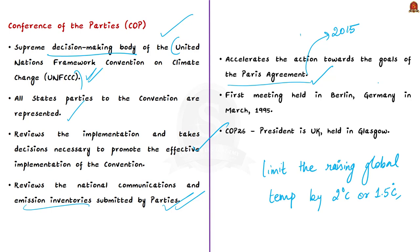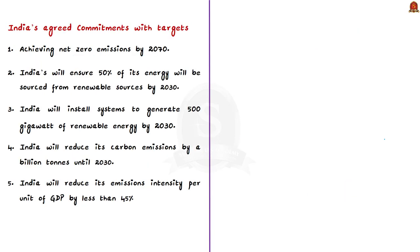The COP meets every year. The first COP was held in Berlin, Germany, in 1995. This year we have the 26th annual summit — COP26. The host country is the United Kingdom, and the summit is taking place in Glasgow. Today we focus only on the commitments agreed by India. India has agreed to five commitments with targets, so let us see them one by one.